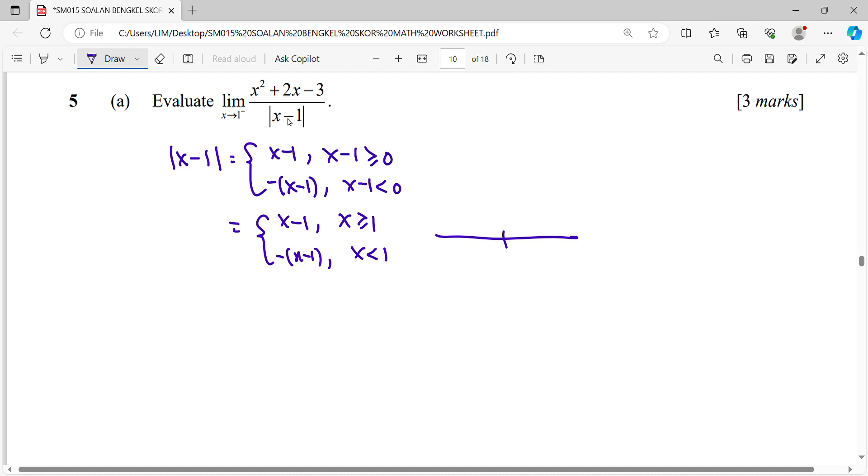So it means that in the modulus part, more than 1 you use x minus 1, less than 1 you will use negative (x minus 1). Go back to the question: limits here you are approaching 1 from the left-hand side, so your correct function to be used in the part of modulus is left-hand side, 1 from the left-hand side.